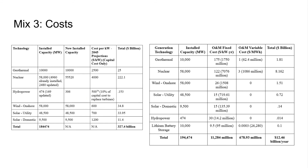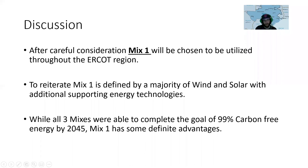For Mix 3 O&M costs, the largest investment by far is nuclear, totaling $8.162 billion for one year, while hydropower is the cheapest at around $14 million per year. The total O&M for Mix 3 comes out to $12.46 billion per year.